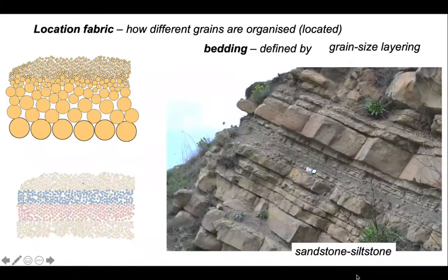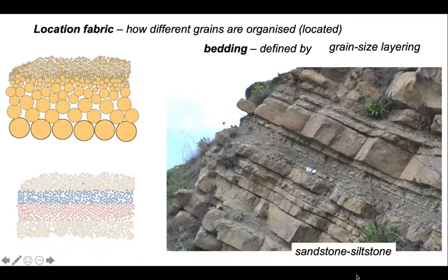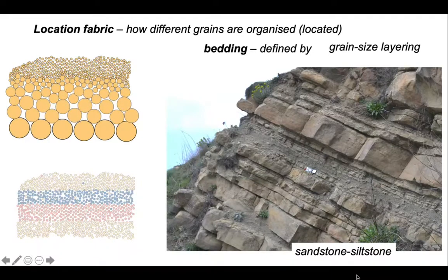So this is of course bedding, and we've been looking at sedimentary rocks. The term location fabric is purely descriptive; the term bedding is a genetic term which relates to the fact that these are sedimentary. It's useful having a non-genetic terminology when developing a geological analysis. We can deduce that the feature we can see in the outcrop is bedding, having first established it is a location fabric.